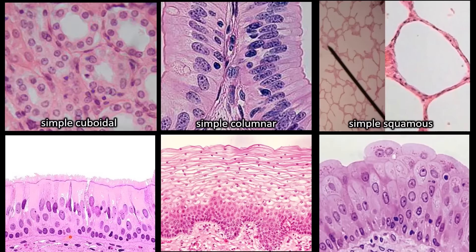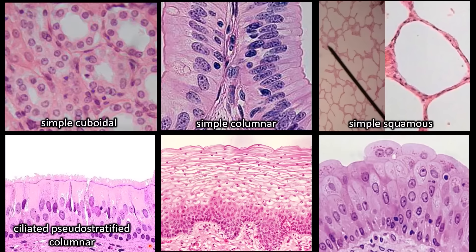In this example, your first instinct is to probably think you're seeing multiple layers of cells because you're seeing multiple layers of nuclei. But what you're actually seeing is a short cell and some tall cells, and they're all attached to the basement membrane — so this is really only one layer. This is the ciliated pseudostratified columnar epithelium. It is called ciliated because it has cilia on top. Pseudostratified — pseudo means fake, like pseudoscience is fake science — means fake layers. The taller cells are column-shaped.